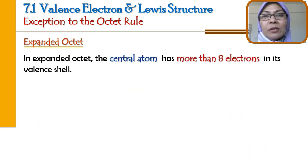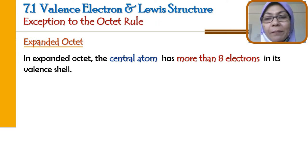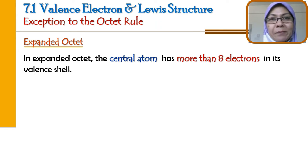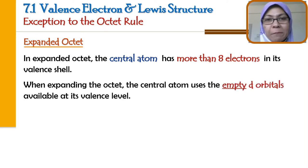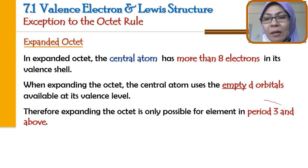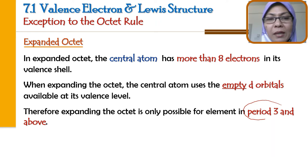Moving on. Itu kalau tidak cukup 8. Kalau berlebih 8, kita kata dia expanded octet. Molekul-molekul yang mana center atom-nya mempunyai lebih daripada 8 elektron, kita panggil expanded octet. Contoh-contoh molekul yang ada expanded octet adalah elemen-elemen daripada Period 3 dan ke atas — ini saja elemen-elemen yang boleh ada expanded octet.